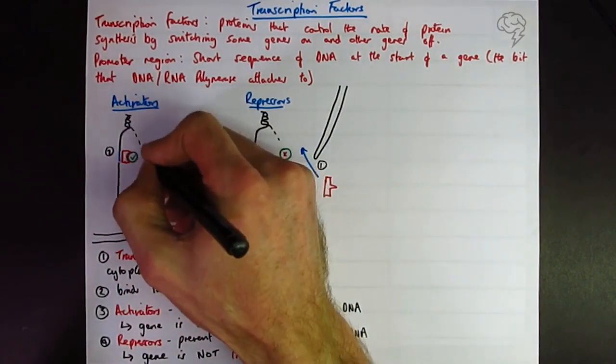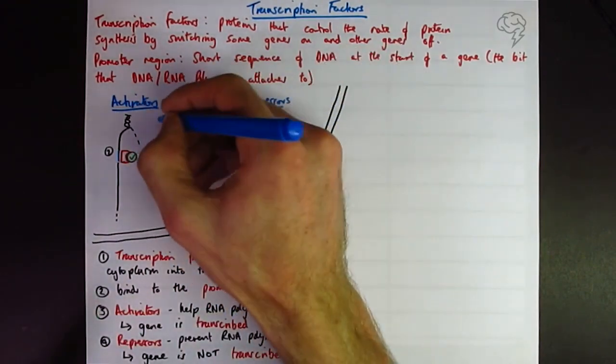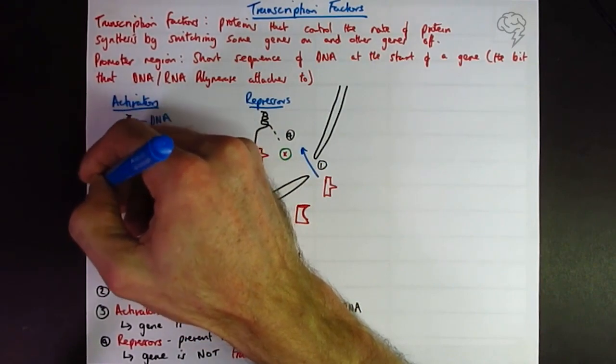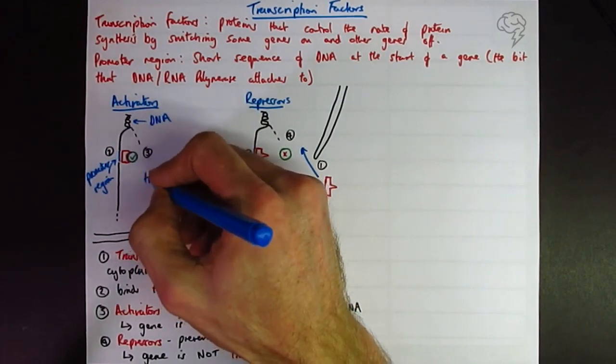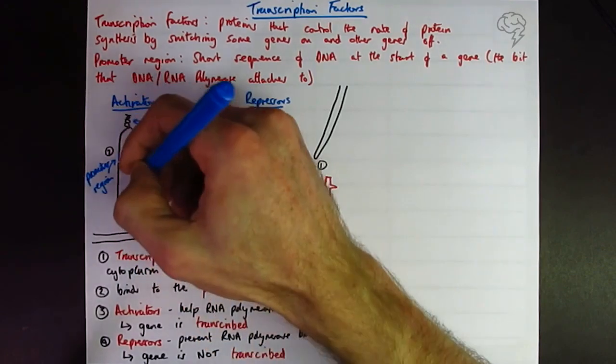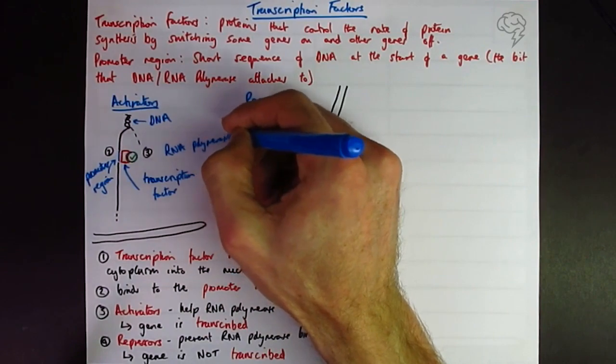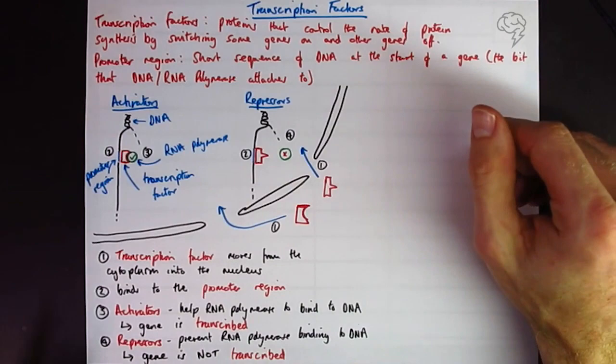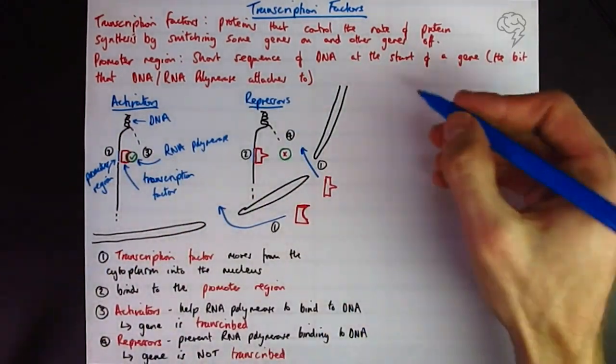Activators help it, help the RNA polymerase, repressors prevent it. OK, and then maybe we'll just label it up in blue. So we've got DNA, obviously, the promoter region. We have our transcription factor. And RNA polymerase. I could label both, but I'm not going to. I think that's clear enough from what we've got there. Now we need to know how they're controlled.